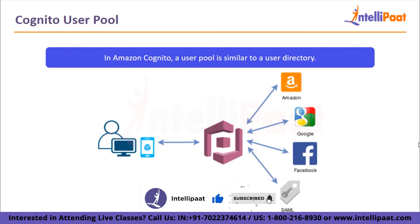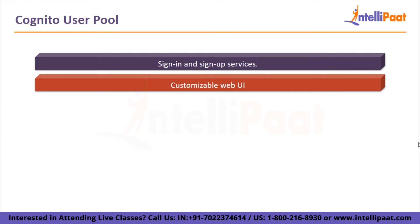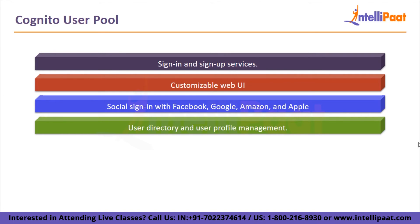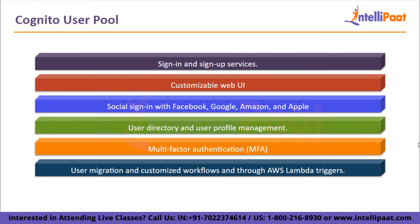User pool provides the following services: sign-in and sign-up services, customizable built-in web UI to sign up users, social sign-in with Facebook, Google, Amazon, and Apple, as well as sign-in with SAML identity providers, user directory and user profile management, multi-factor authentication (MFA), checks for compromised credentials, account takeover protection, and phone and email verification for all security features. User migration and customized workflows are also available through AWS Lambda triggers.